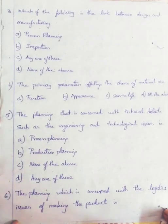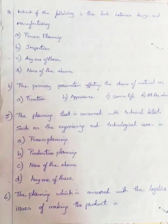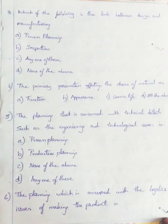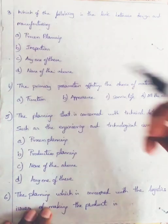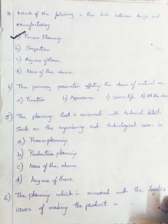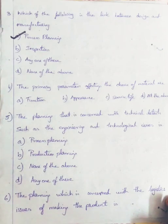Question 3: Which of the following is a link between design and manufacturing? Option A: Process Planning. Option B: Inspection. Option C: Any one of these. Option D: None of the above. The correct answer is Process Planning because the order is: design, then process planning, then manufacturing, then inspection.